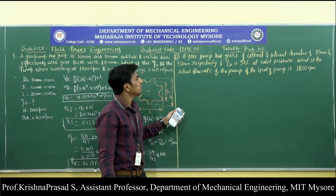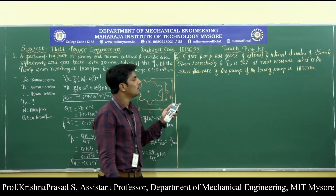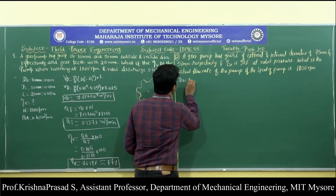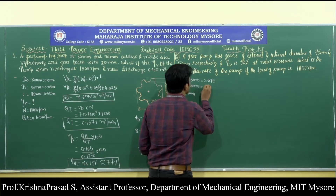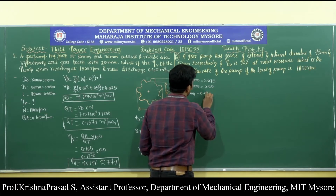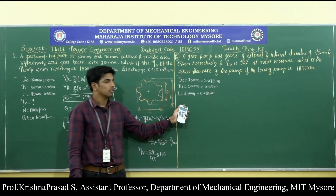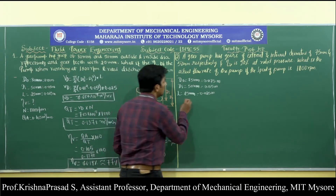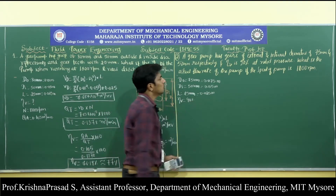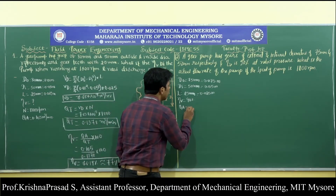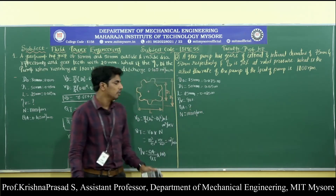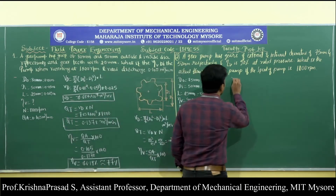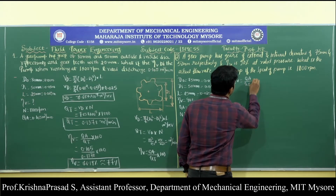Moving on to the second problem: a gear pump has external and internal diameters of 75 mm and 50 mm respectively, with a gear width of 25 mm. So D0 = 0.075 m, Di = 0.05 m, and L = 0.025 m. The volumetric efficiency is given as 90%, the pump speed is 1000 RPM, and we need to find the actual flow rate QA.